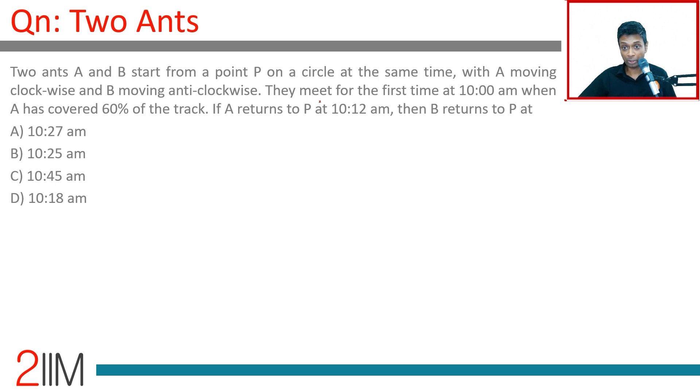Two ants A and B start from a point P on a circle at the same time. Look at this: A moves clockwise, B moves anti-clockwise. They meet for the first time at 10:00 AM when A has covered 60% of the track. This will be somewhere around 60% of the track - this is the first meeting at 10:00 AM.